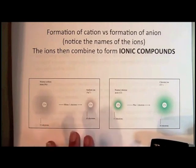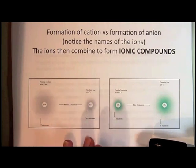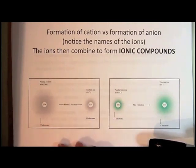Now, in order to form a sodium ion, there has to be some place for that electron to go. If the electron is going to leave, the electron has to go somewhere.